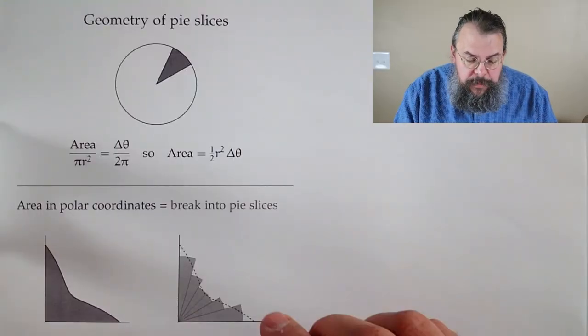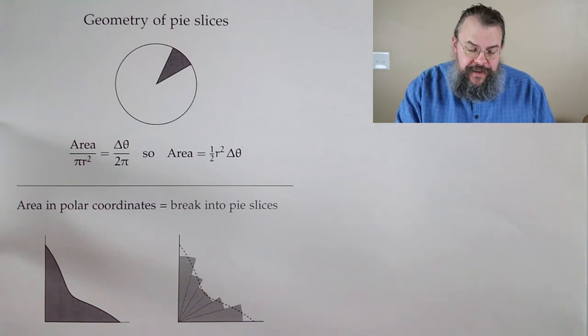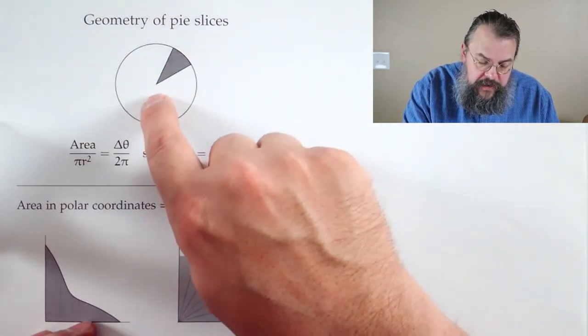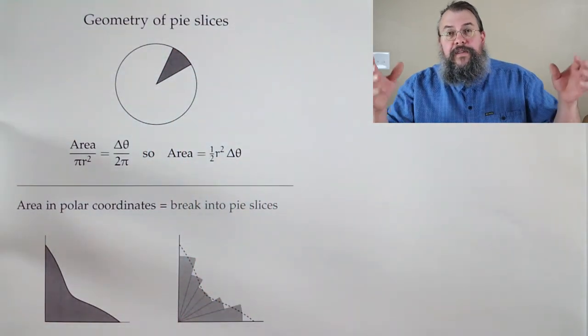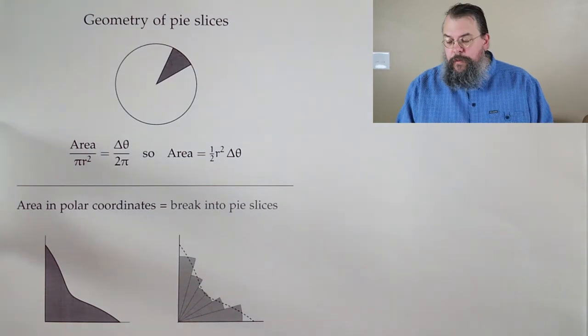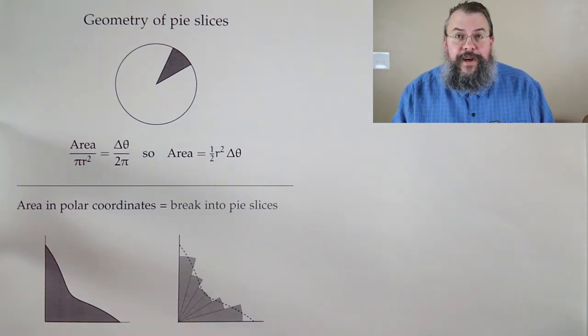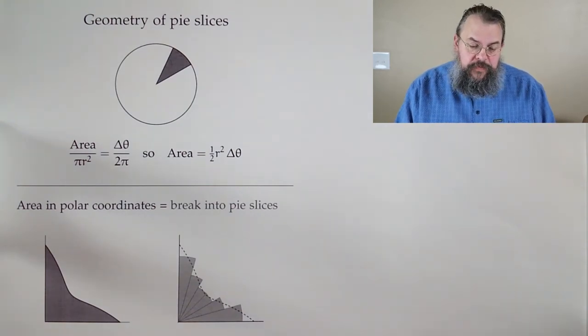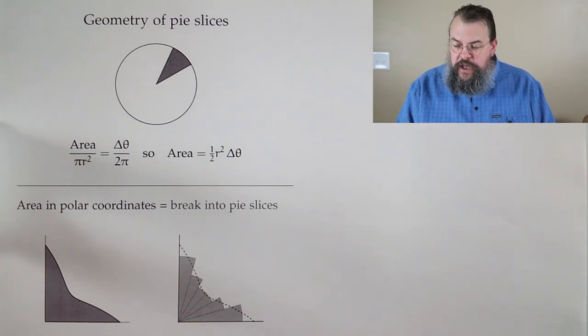So our basic underlying shape is not a rectangle. It's a pie slice. Well, our pizza slice, whatever you want to call it. Whatever your favorite round thing is that you've cut something out from the center.